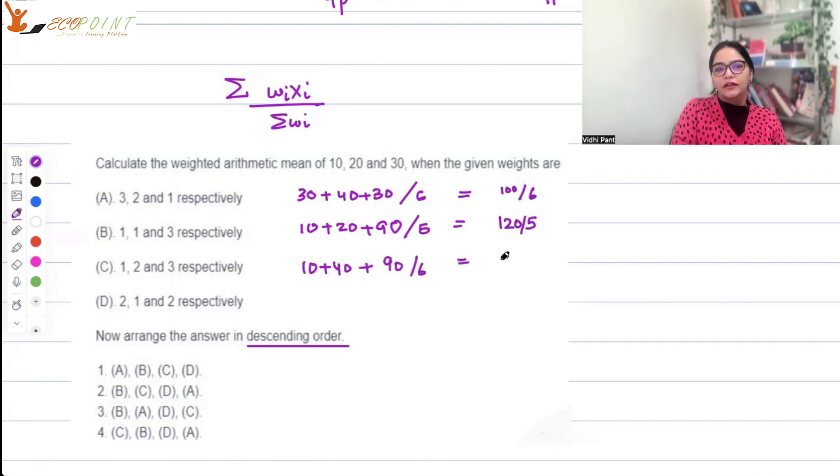And this one is 20 + 20 + 60 upon 5, so this is 100/5.